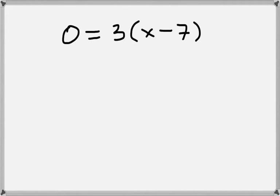Now let's look at 0 equals 3 times x minus 7. The first thing that we can do is get rid of the parentheses by distributing.